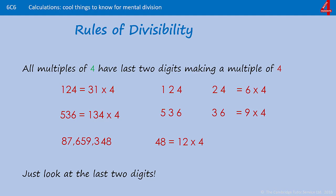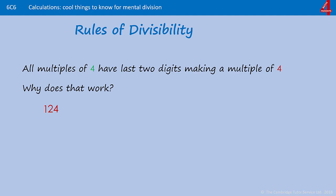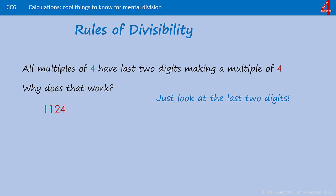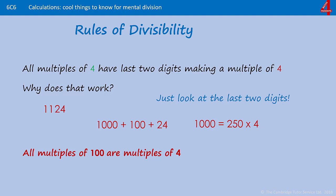If you want to understand why this works, go back to 124: break it down as 100 plus 24. 24 is 6 times 4, and 100 is 25 times 4. Adding another digit in front still gives a multiple of 4, because 1000 + 100 + 24 are each multiples of 4 — 1000 is 250 times 4, 100 is 25 times 4, and 24 is 6 times 4. All multiples of 100 are multiples of 4, so as long as the tens and units come to a multiple of 4, the whole number is a multiple of 4.